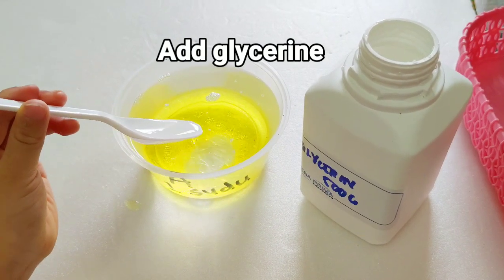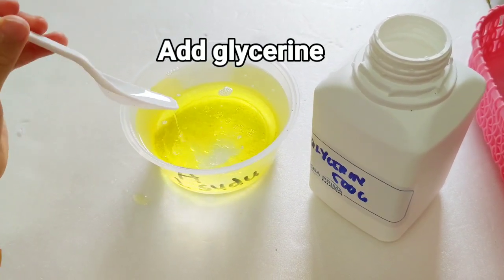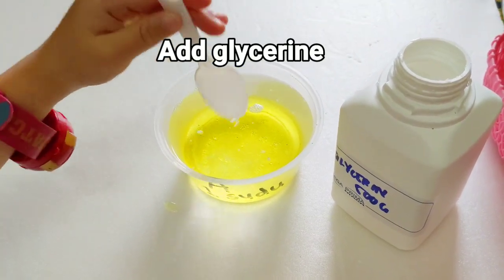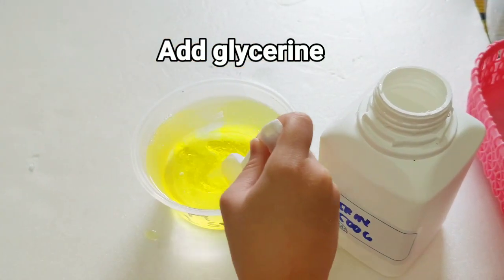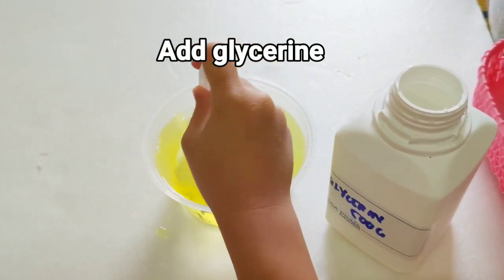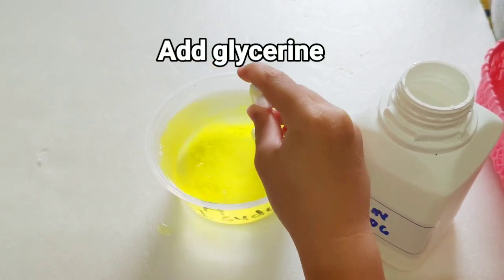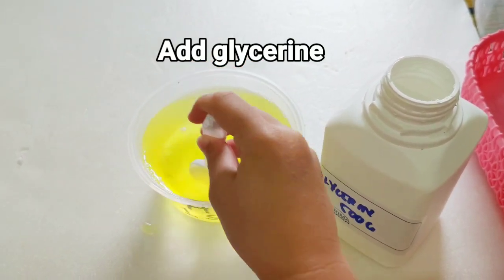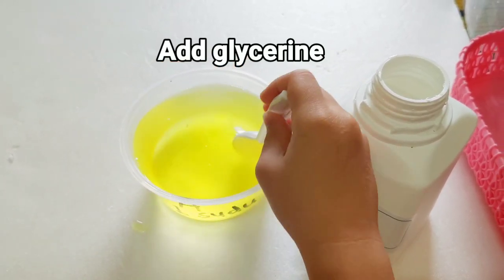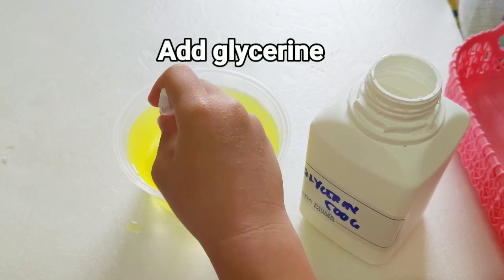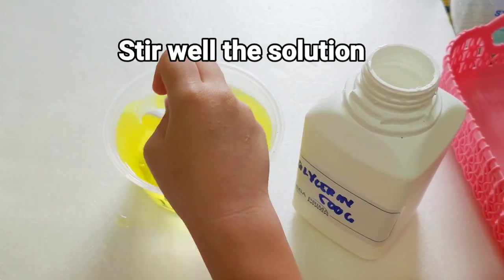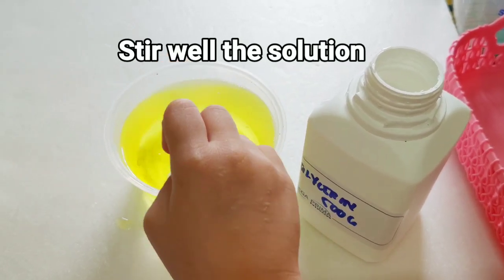Add 1 tablespoon of glycerin into the soap solution. Stir well without producing any bubbles. Stir the solutions carefully. Make sure to stir well with the solution and be careful.